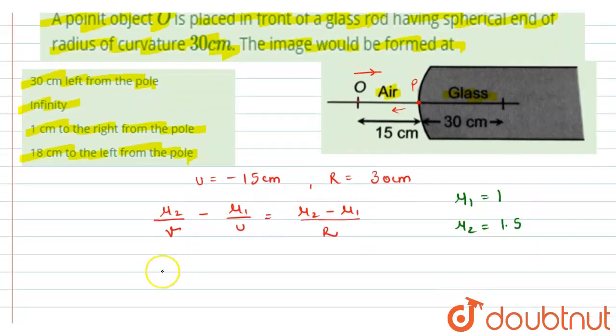So now let's put the values we have. This would be 1.5 divided by v minus mu 1 is 1 over minus 15 equals to mu 2 minus mu 1 would be 1.5 minus 1 divided by 30 centimeters.